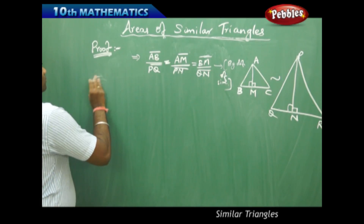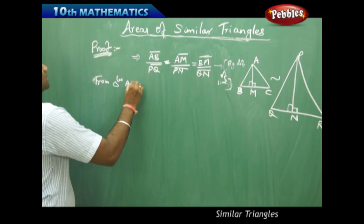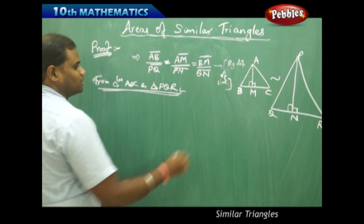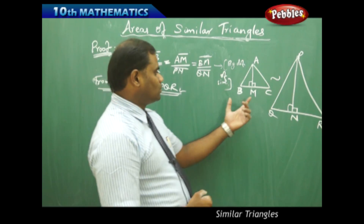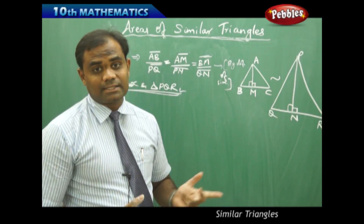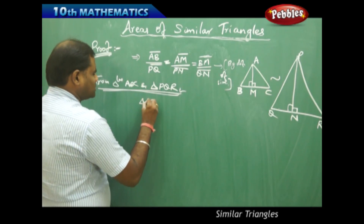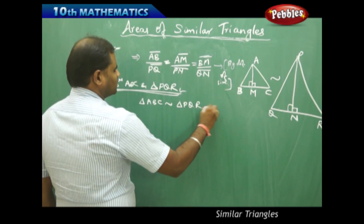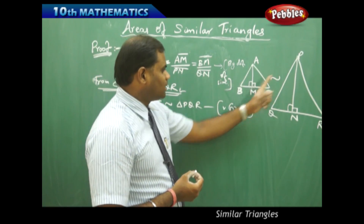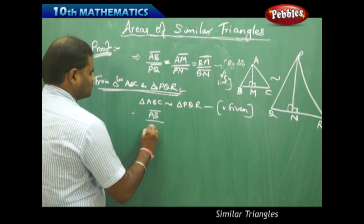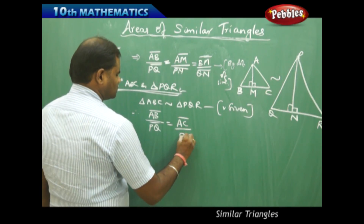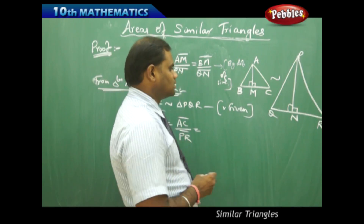From triangles ABC and PQR, since it is given that triangle ABC is similar to triangle PQR, the corresponding sides are in the same ratio: AB/PQ = AC/PR = BC/QR.